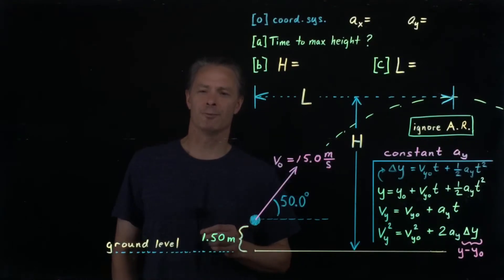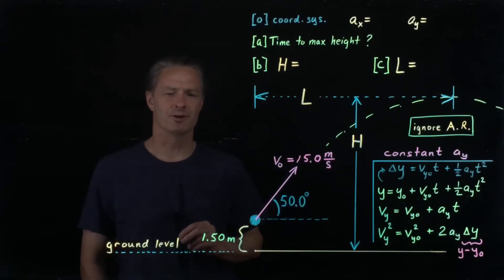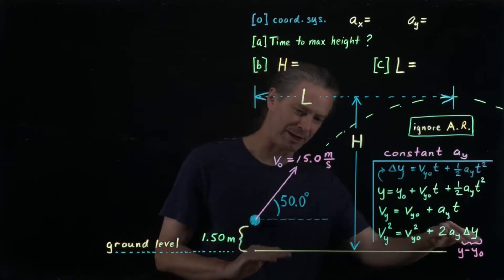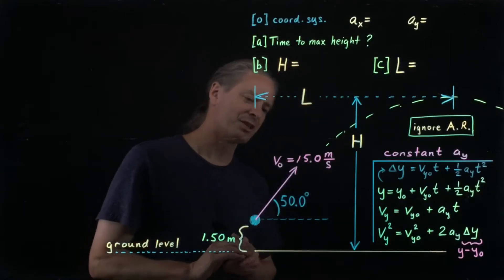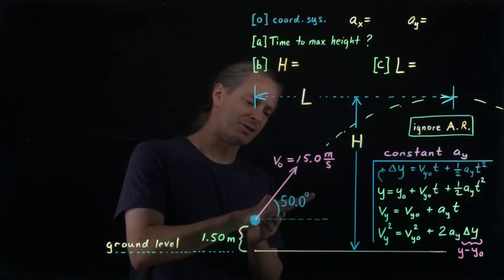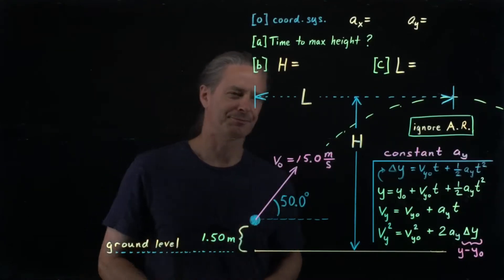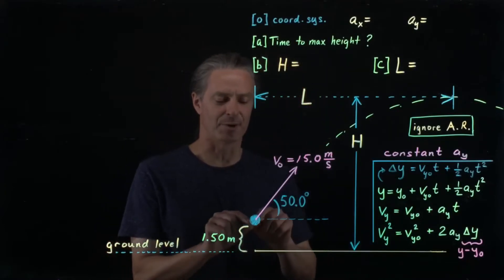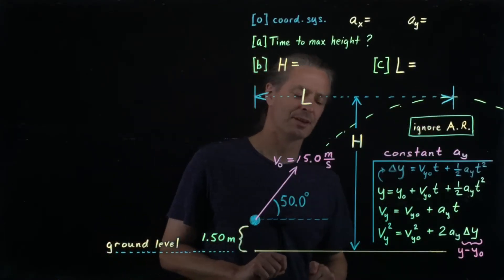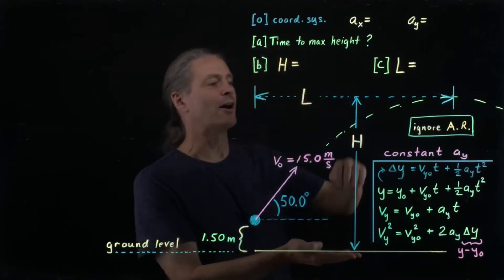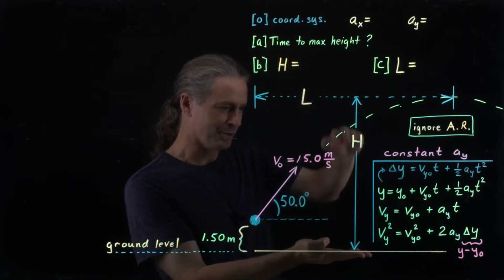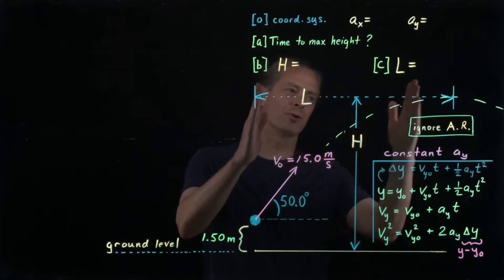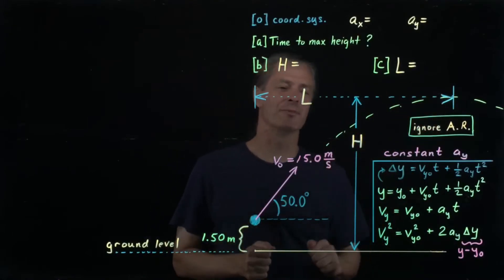Hi, everybody. In this video, I want to work through an idealized projectile motion problem in which a ball has been launched from a height of 1.5 meters above the level ground with a launch velocity of magnitude 15 meters per second in a direction 50 degrees above the horizontal. I want to calculate: first, how long does it take the ball to go from launch to maximum height; second, how high is maximum height above the level ground; and third, how far the ball travels horizontally in the time between launch and when it reaches maximum height.